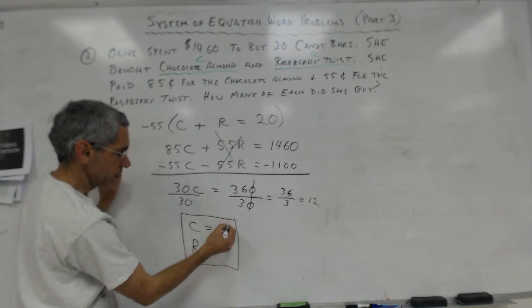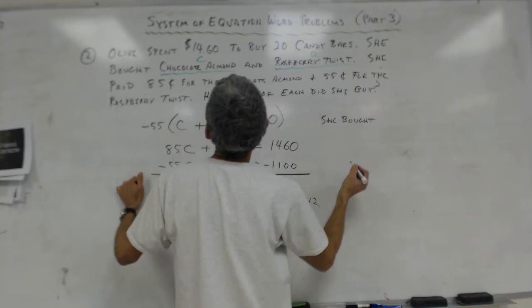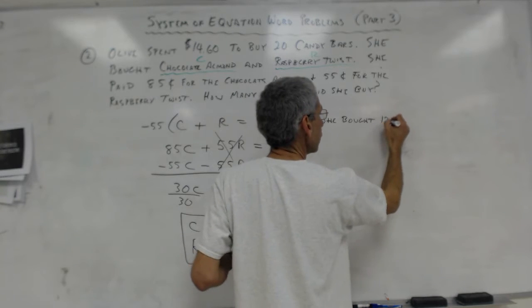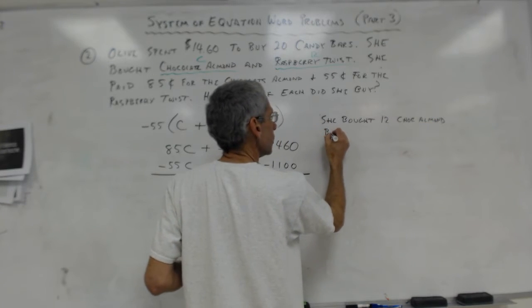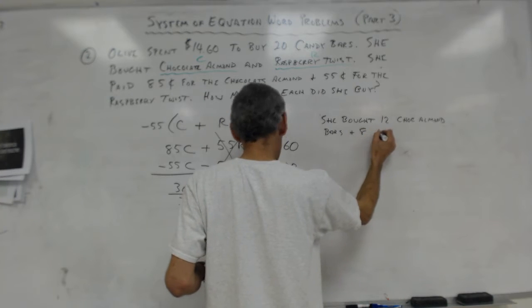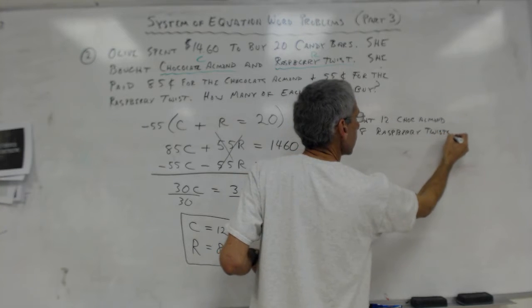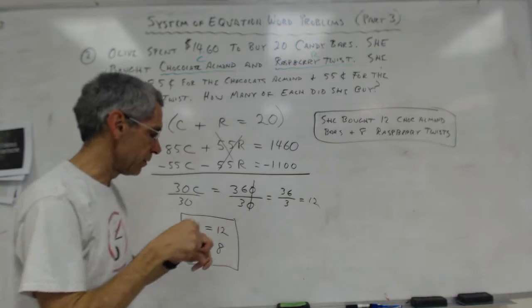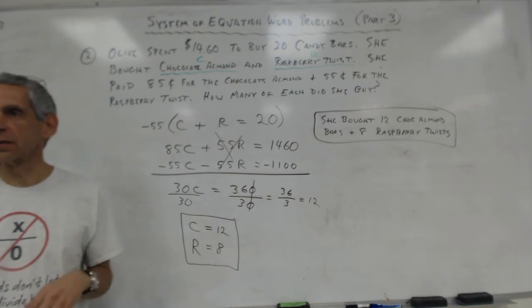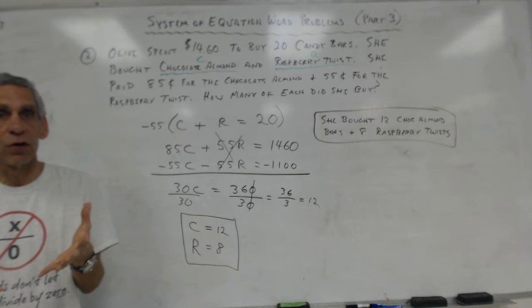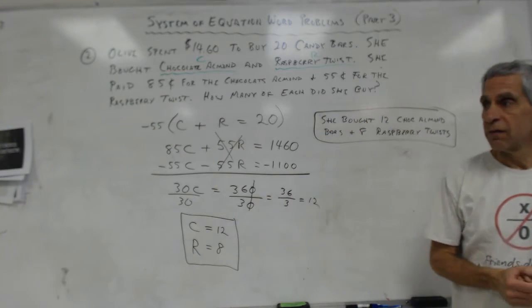And I am done. So I have to say it. So she bought 12 chocolate almond bars and 8 raspberry twists. And then I put it in a box so the teacher can find it, and I'm done. Do you guys feel like you get it? It's just like last night's, exactly like last night's. Systems of equations in general are really easy and they're very, very powerful. Very powerful.